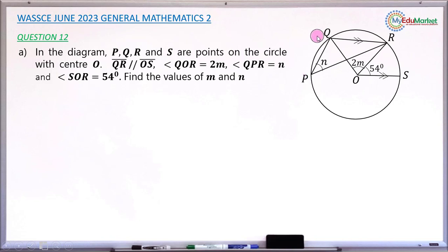The center of the circle is O, and these four points are points on the circumference of that very circle. The question further says line QR and line OS are parallel to each other. And the angle QOR is 2M, that is denoted by 2M, and the angle QPR is denoted by letter N.